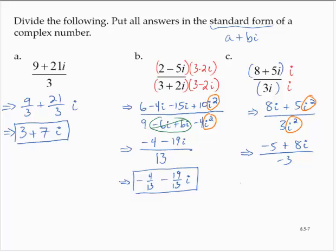Rewriting this in standard form, I'd have negative 5 over negative 3, positive 5 thirds. And then I'd have positive 8 over negative 3, minus 8 thirds i.